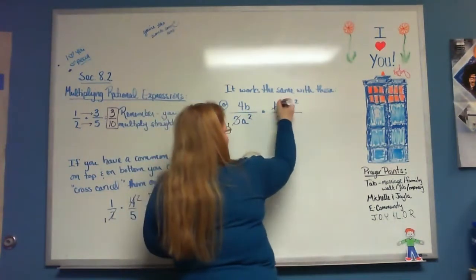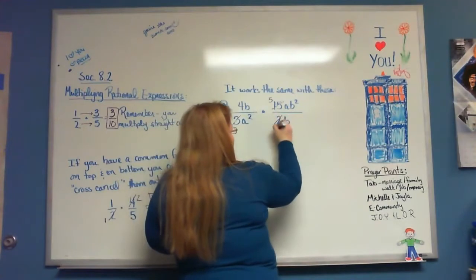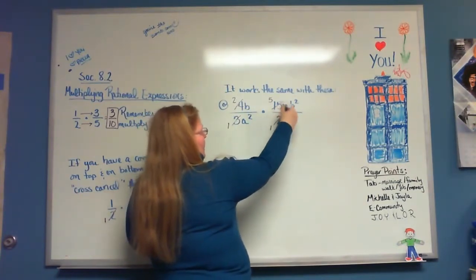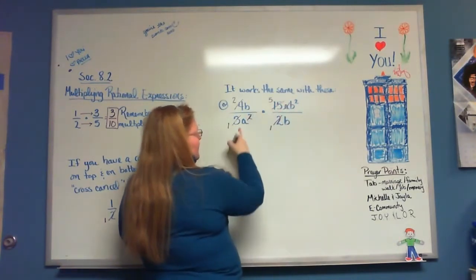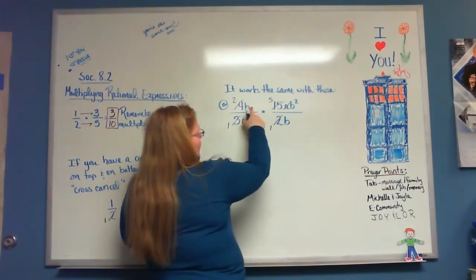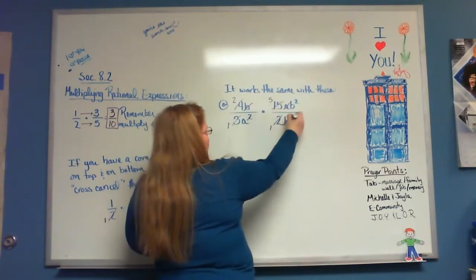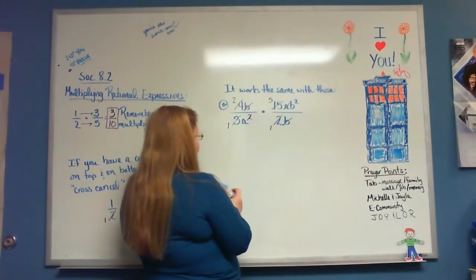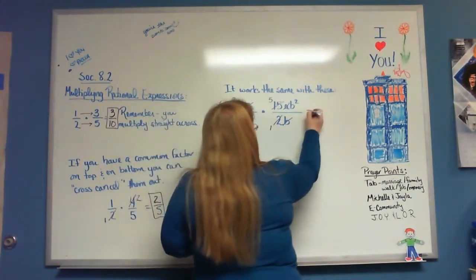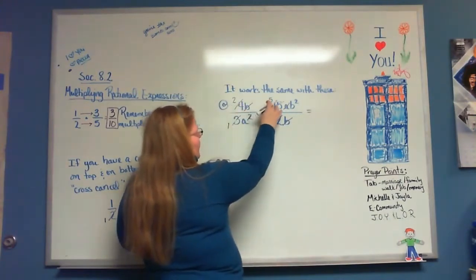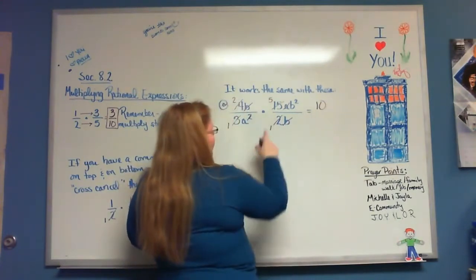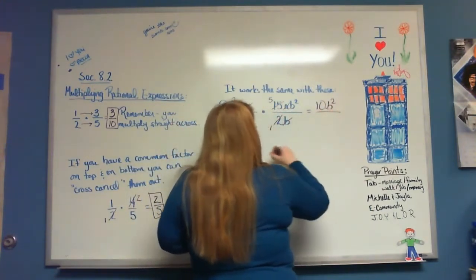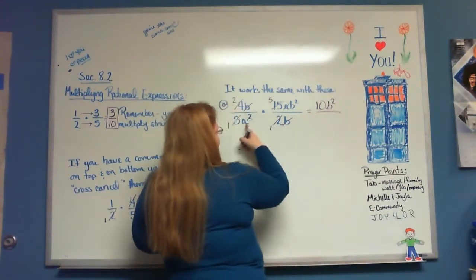Here, 3 goes into 3 one time, 3 goes into 15 five times, 2 goes into 2 one time, 2 goes into 4 two times. I have 2 a's on the bottom and 1 a on top, so that a cancels with one of the a's down here, leaving one a. I have 1 b on top and 1 b on the bottom so those cancel. Multiplying across: 2 times 5 is 10 on top, leaving 10b squared on top and just an a on the bottom.